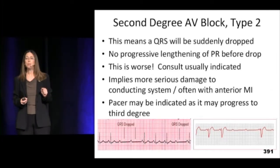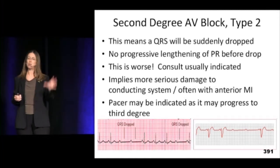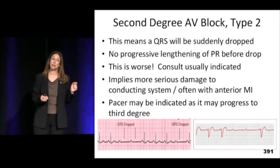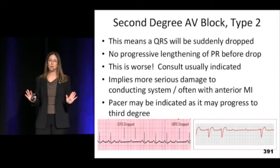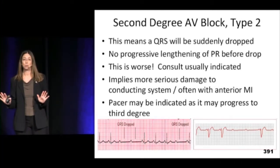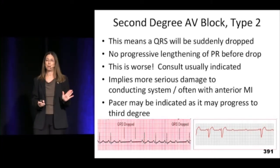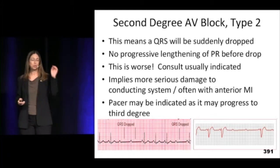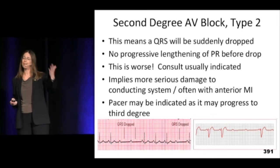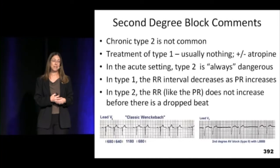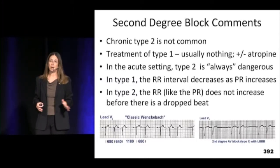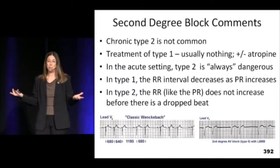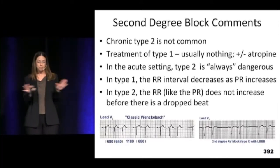Mobitz 2 is different. The PR intervals are the same all the time, and then all of a sudden there's a P wave with no QRS. That's not good. This is considered a significantly dangerous rhythm — no one should go home with a Mobitz 2. Their electrical conduction system is not responding like it's supposed to, which may be from ischemia or inherent heart disease. You can be in chronic Mobitz 1 for days or weeks, but Mobitz 2 will either degenerate to third degree heart block or reverse itself. It doesn't sit there with intermittently dropping beats — it declares itself one way or the other.